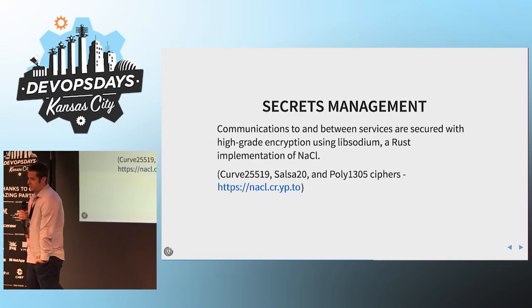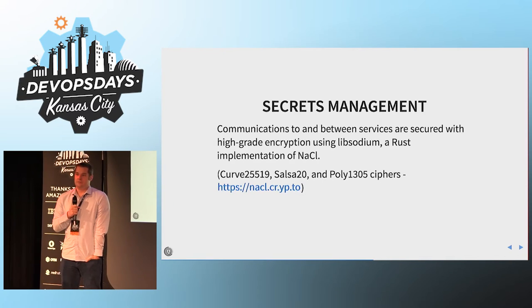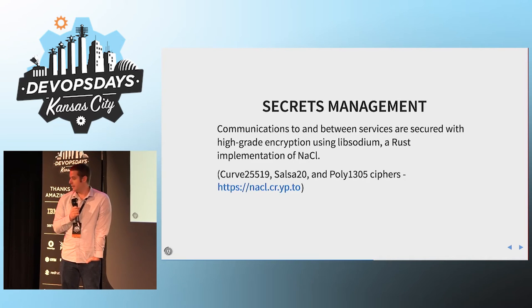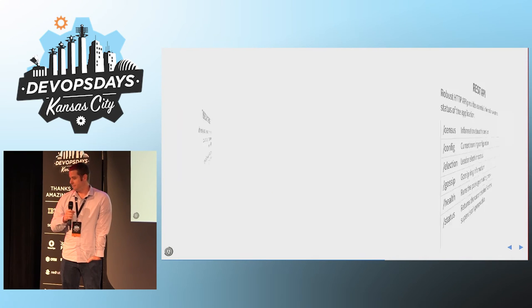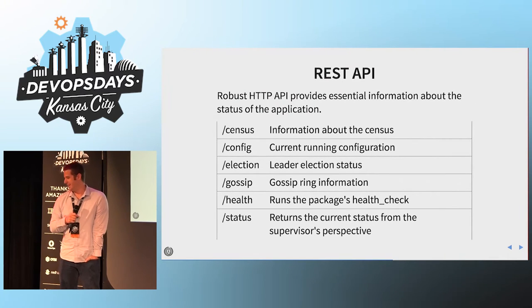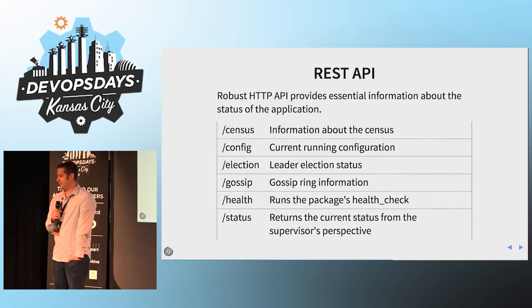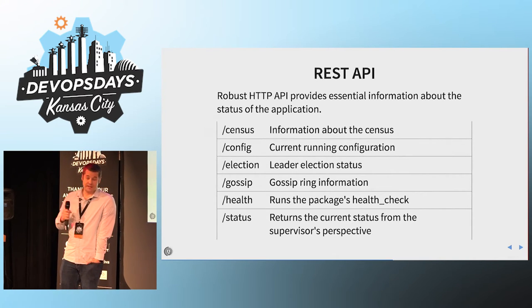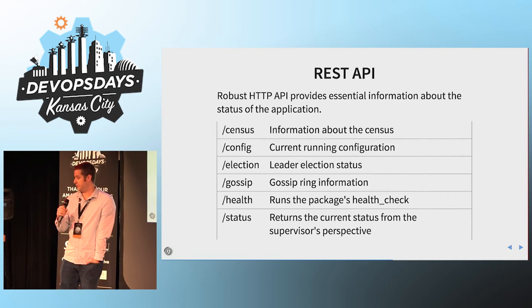You get some secrets management — strong encryption. They're using Libsodium, which is a Rust implementation of the NaCl library, so you get some advanced cipher stuff. And then you also get a robust HTTP API with a whole bunch of endpoints. I'm going to talk about one of them next — the health one — which I think is really important.